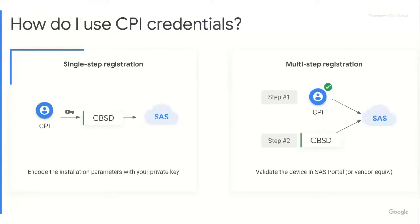That will vary depending on what CBSD you're trying to sign. But essentially, you put your certified information along with your password into that device to ensure that the information the device has — its latitude, longitude, elevation, et cetera — is accurate.